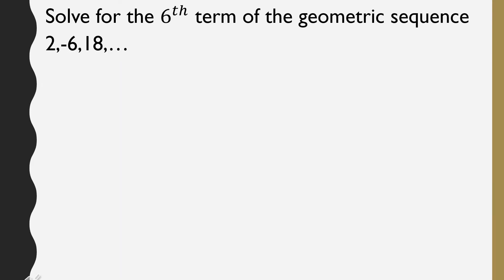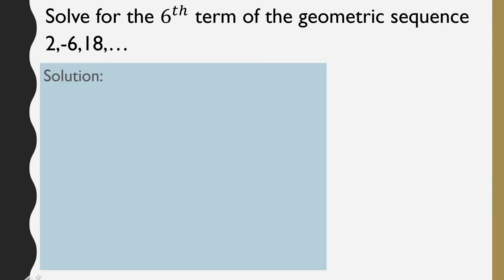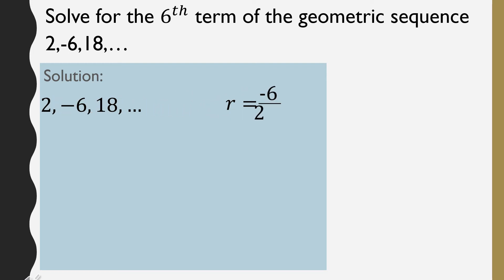Let's try another one. Again, we start by solving R first. We have the second term divided by the first term: negative 6 divided by 2. The quotient is negative 3, so negative 3 is our value of R.